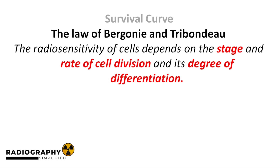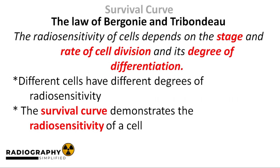When I was an undergraduate radiography student and was asked a question relating to radio sensitivity, I would often start my answer by quoting this law, because I consider it to be the bedrock of radio sensitivity. The law tells us that the radio sensitivity of cells depends on cell division and degree of differentiation. Because different cells divide at different rates and differentiate to different degrees, we can assume that different cells of the body have different degrees of radio sensitivity.